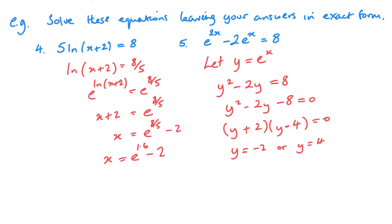And since y was e of x, e of x will equal negative 2 or e of x will equal 4. Now, my solution on the left, e of x equals negative 2, this is impossible. e of x cannot be a negative value.